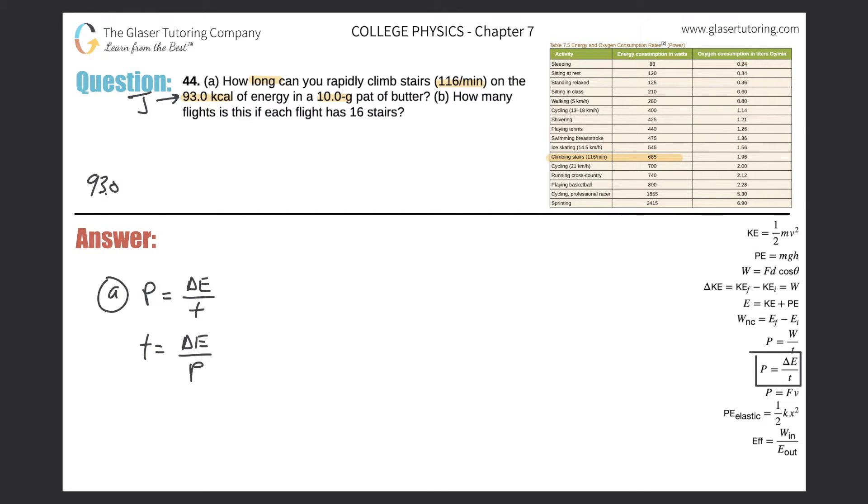So 93.0 kilocalories. Remember that in one kilocalorie, there are 4,184 joules. So the kilocalories will cancel. And now let's just do that multiplication. So 93 times 4,184. And we get a value of about 3.89 times 10 raised to the 5, and that is in terms of joules. So that is our energy value.